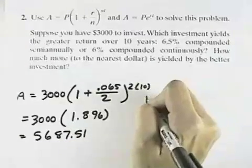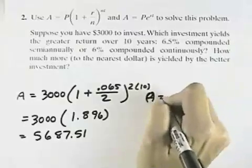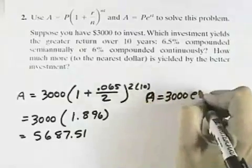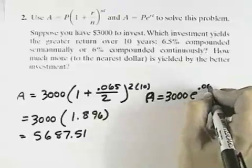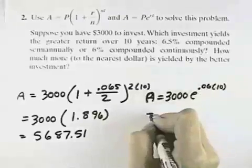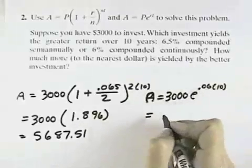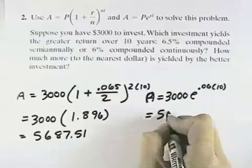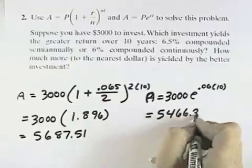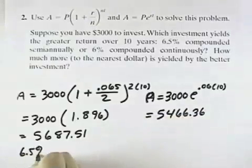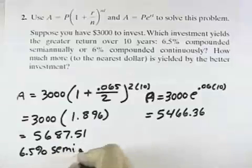If I instead look at the continuous compounding, I'll have my A is equal to the $3,000 of my principal. And then I have E raised to the R, which is 6% interest rate, for 10 years. If I take $3,000 and then take E to the .06 times 10 and multiply that out, what I'll have is $5,466.36. So I can see that at 6.5% semi-annually is definitely the better choice.